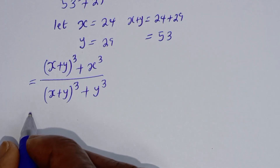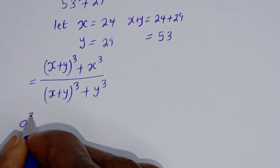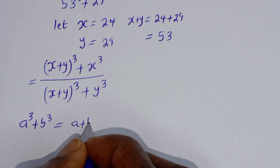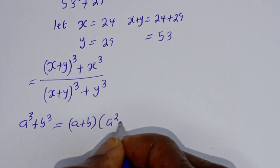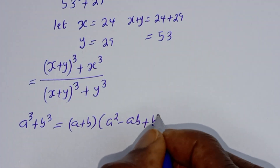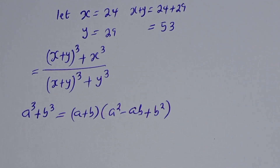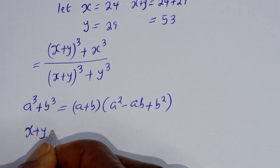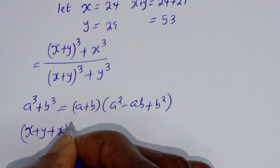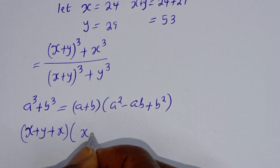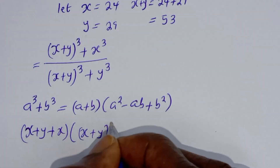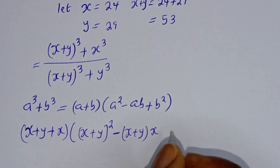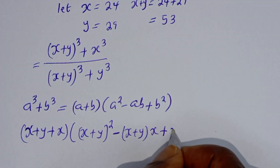Take note of this exponential rule: if you have a raised to power 3 plus b raised to power 3, this is equal to a plus b, bracket a squared minus ab plus b squared. Then this can be written as s plus y, then plus s bracket: s plus y squared minus s plus y multiplied by s, plus s squared.